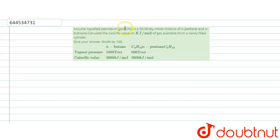Assume LPG is a 50-50 by mole mixture of butane and pentane. Calculate the calorific value in kilojoule per mole of gas available from a newly filled cylinder. Give your answer divided by 100.